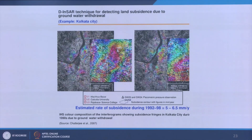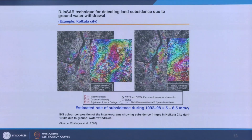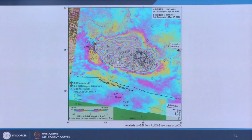Earlier, ENVISAT data, RADARSAT data, and ALOS PALSAR data were very expensive. But Sentinel-1 data is free and provides interferometric data. RISAT is India's radar remote sensing satellite but does not have the capability for interferometric data generation. Sentinel data being free means anyone can apply it to estimate ground deformation induced by any factor.